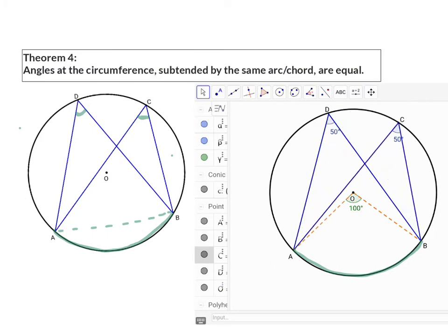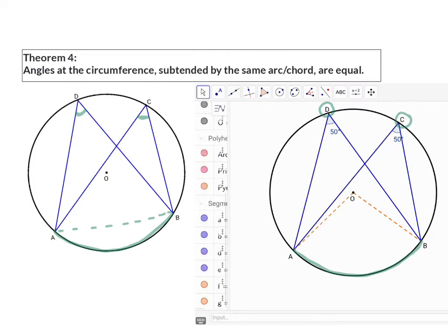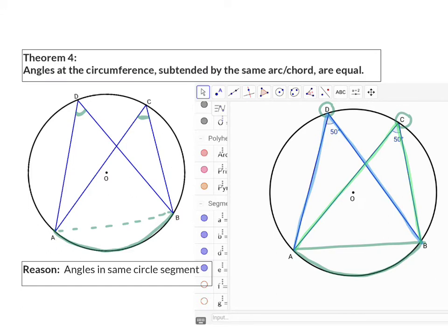Theorem 5. The reason for this theorem is angles in the same circle segment, and this comes from the chord that can be drawn. The chord divides the circle into a major and a minor segment, and these two angles are both in the same segment.